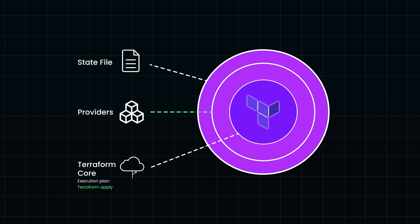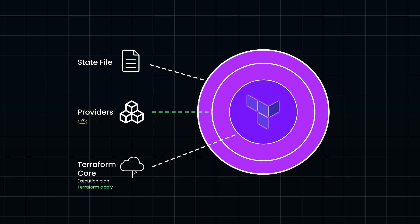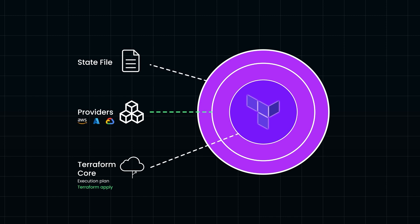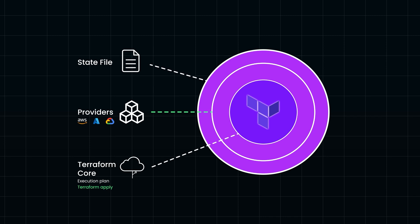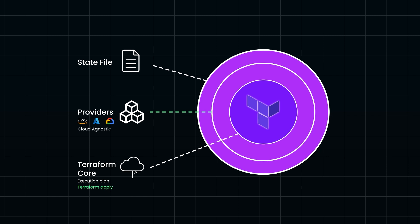Providers are the plugins that allow Terraform to communicate with different cloud platforms like AWS, Azure, or Google Cloud. For instance, you can use the AWS provider to spin up an EC2 instance, or the Azure provider to deploy a VM. Providers make Terraform cloud agnostic, enabling you to work across different platforms effortlessly.